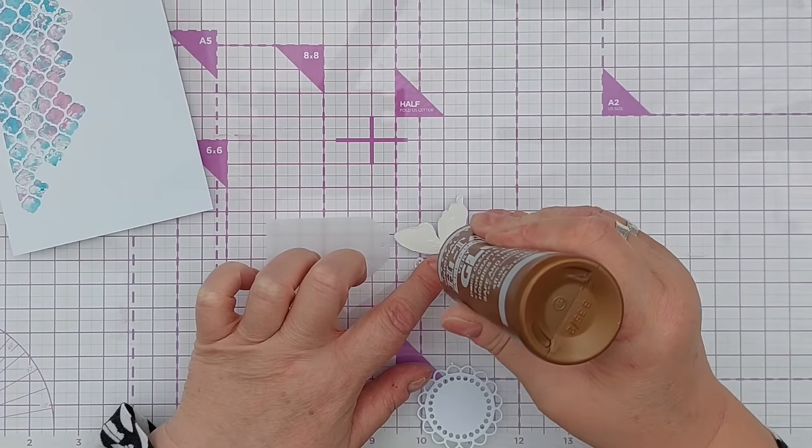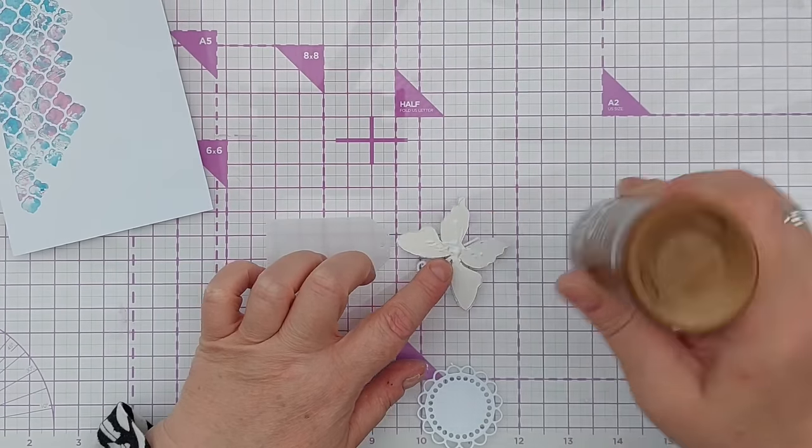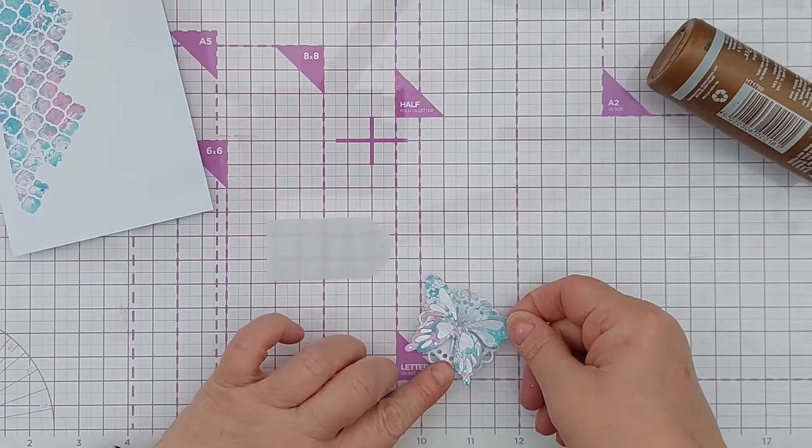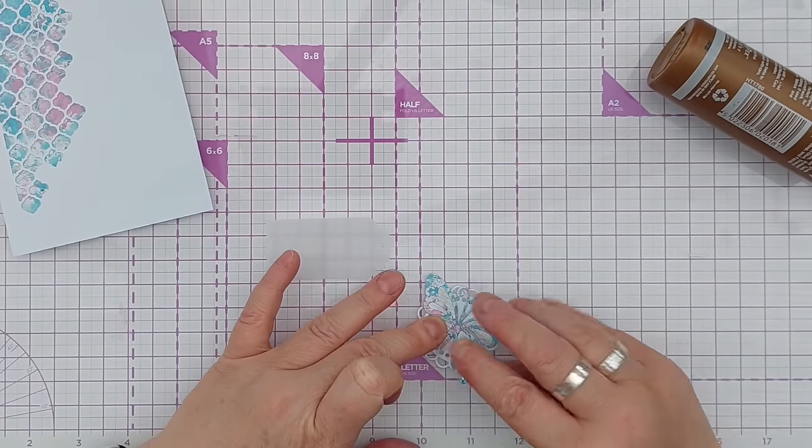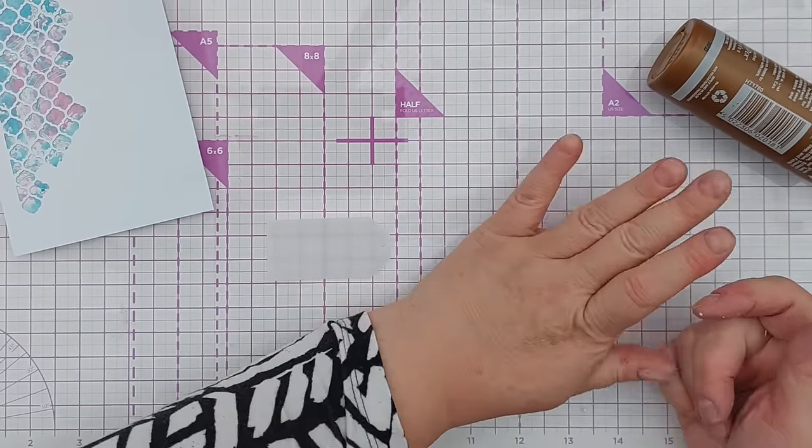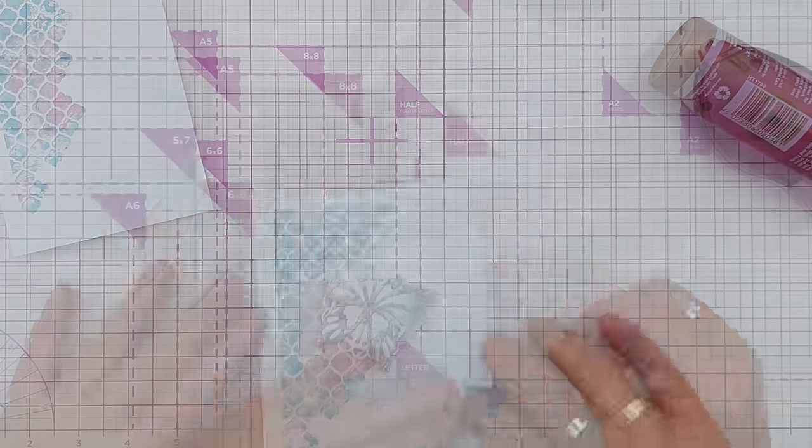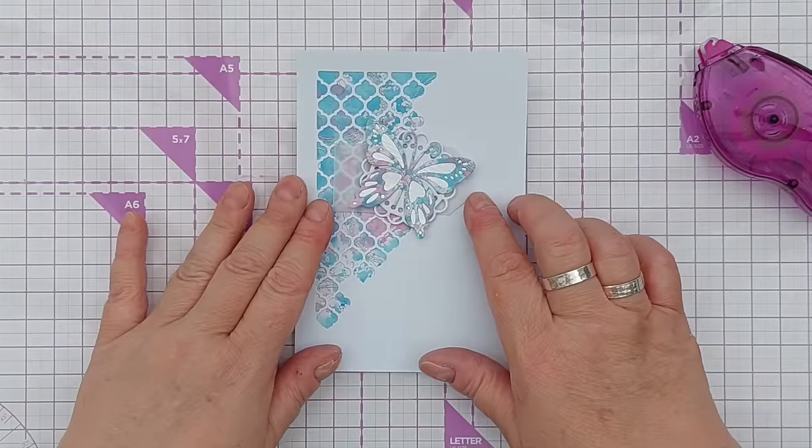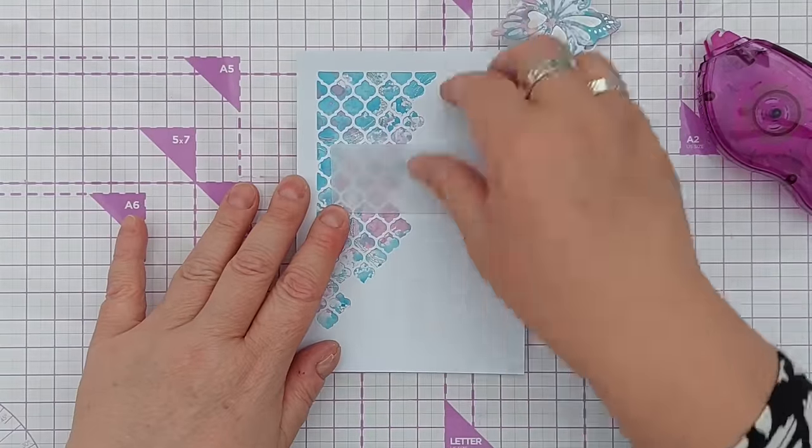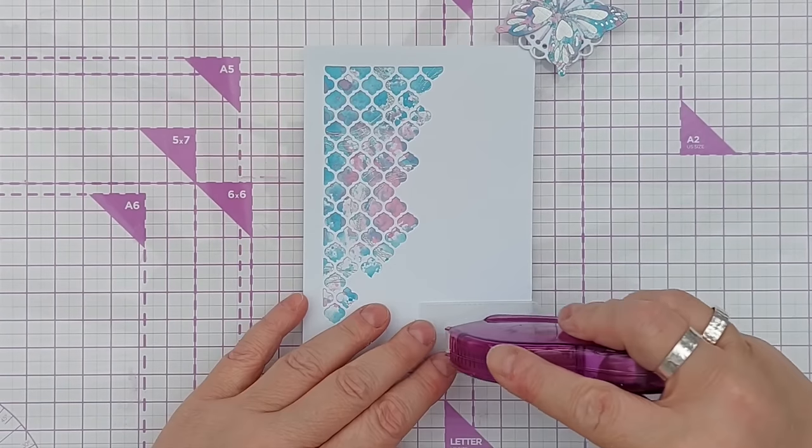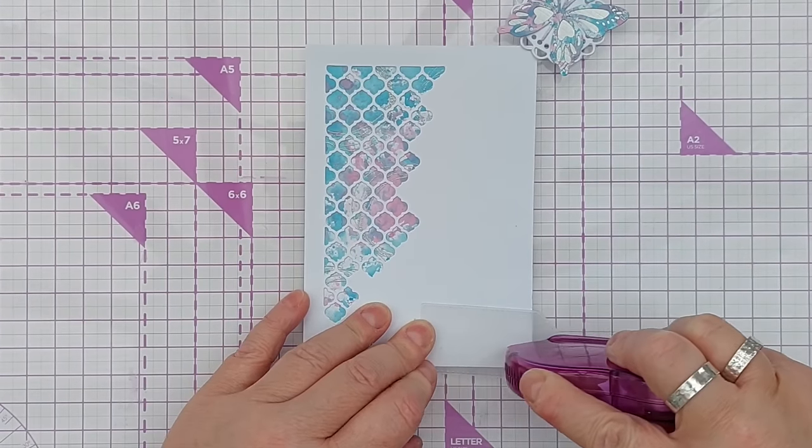So I'll pop some glue on the back of the butterfly and center it on the doily so you can see the doily peeking out all the way around. I think I want my butterfly and tag around about there, so I'm going to use this Crafters Companion tape runner which I find really good for vellum, it doesn't show through particularly.